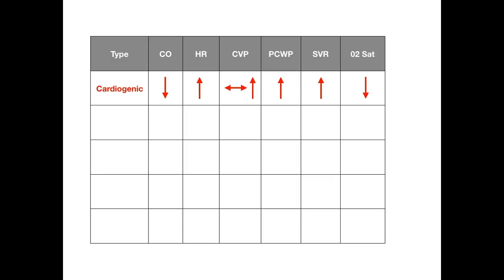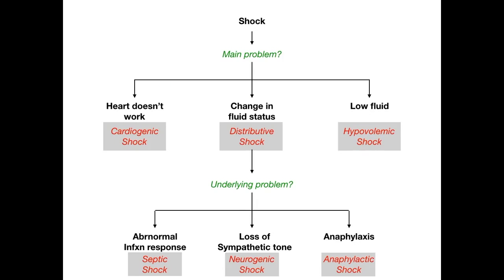Feel free to rewind if you want to hear those up-down arrows again. Going back to our flowchart, we've covered one of five types of shock. Cardiogenic shock — heart doesn't work — done. Let's move on to hypovolemic shock, and then we'll wrap up with distributive since it has three subtypes. In hypovolemic shock, some underlying event causes a loss of fluid.